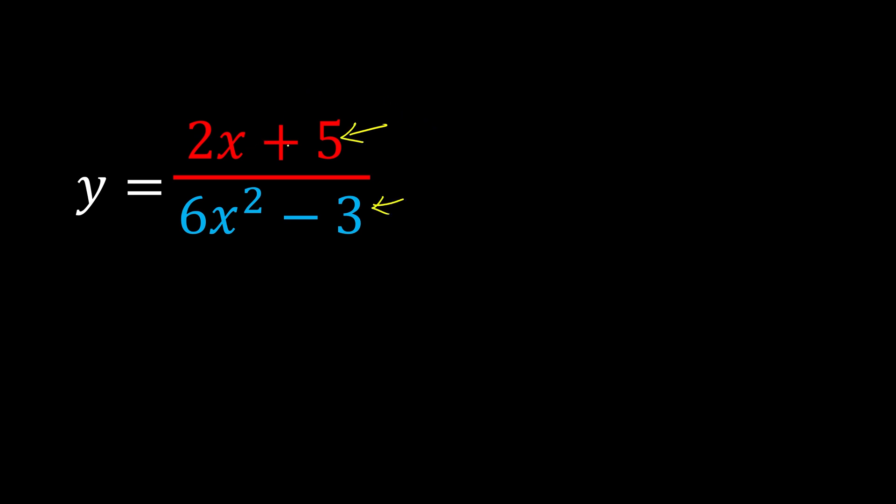If we differentiate 2x plus 5, we know it's going to be 2. Meanwhile, 6x squared minus 3, if we differentiate it, 6 times 2 is 12x power of 1, and the constant is just nothing.